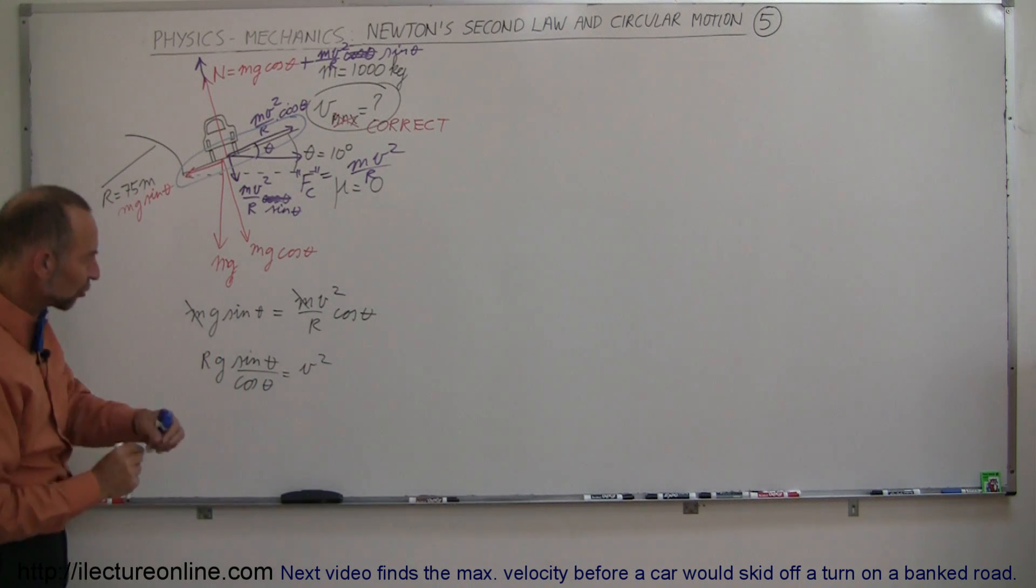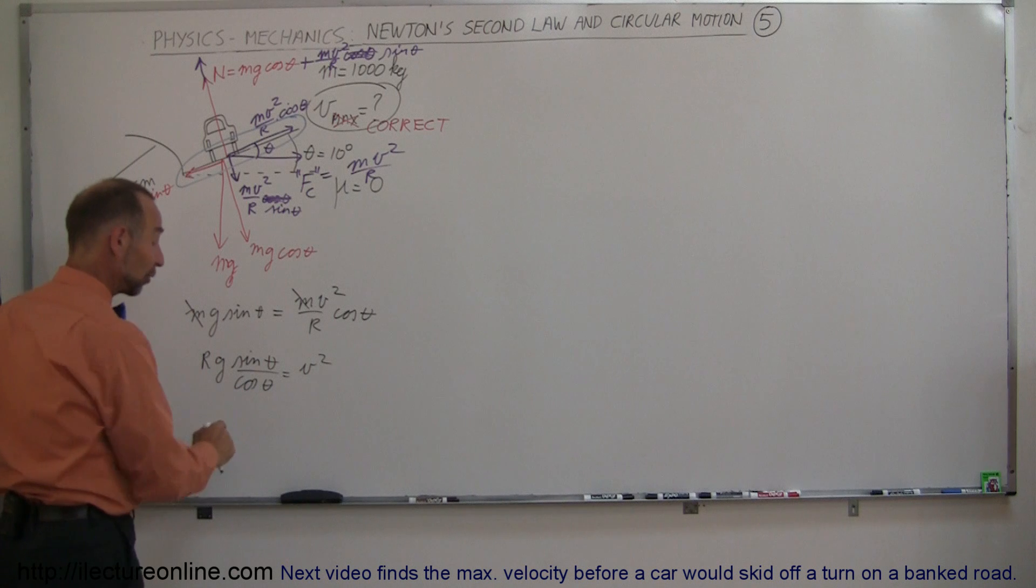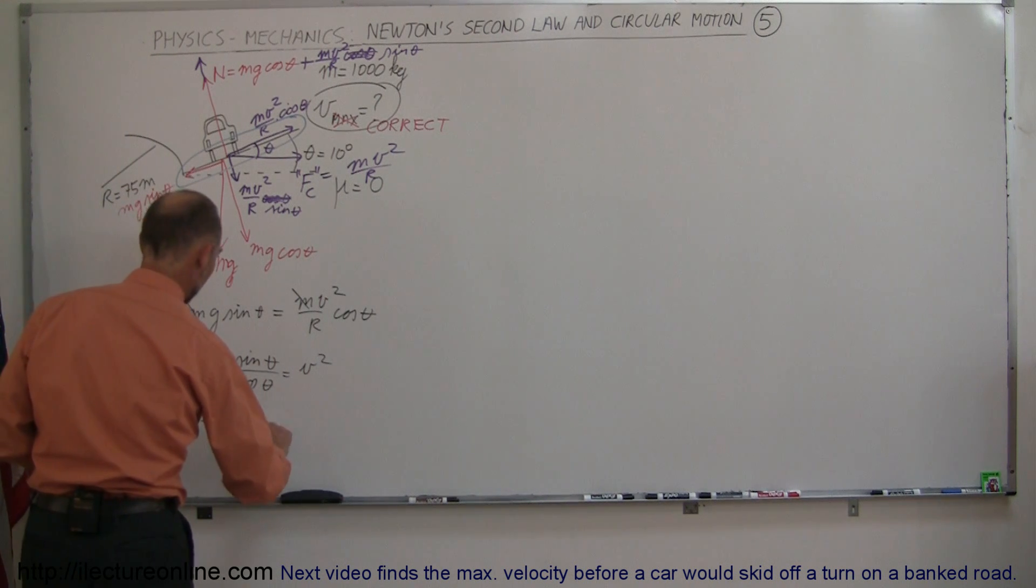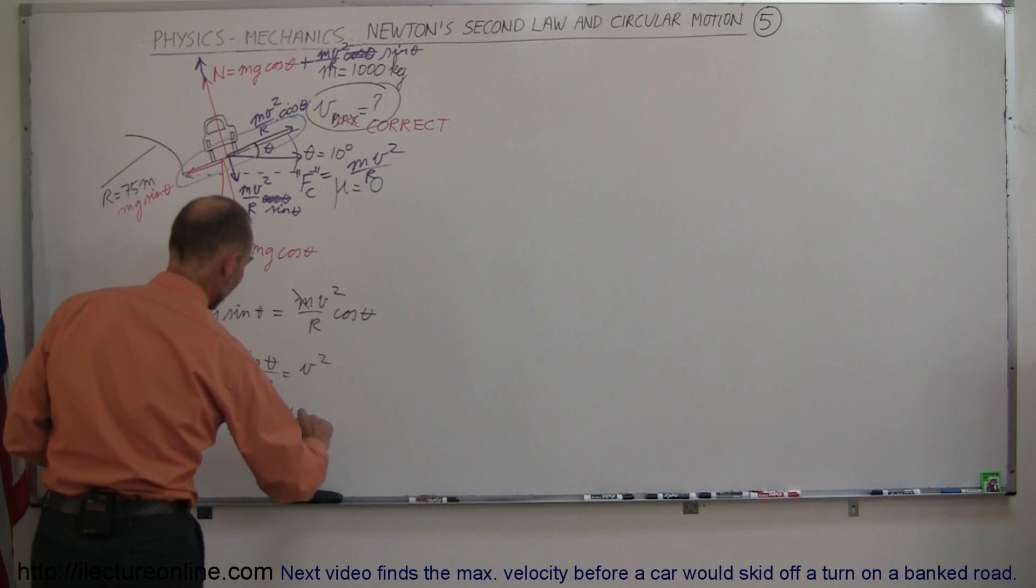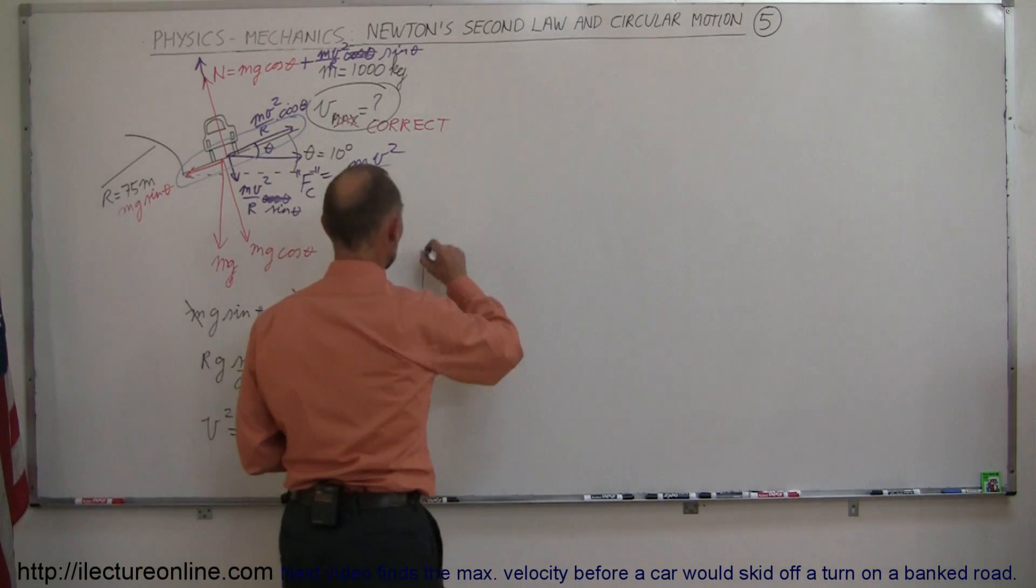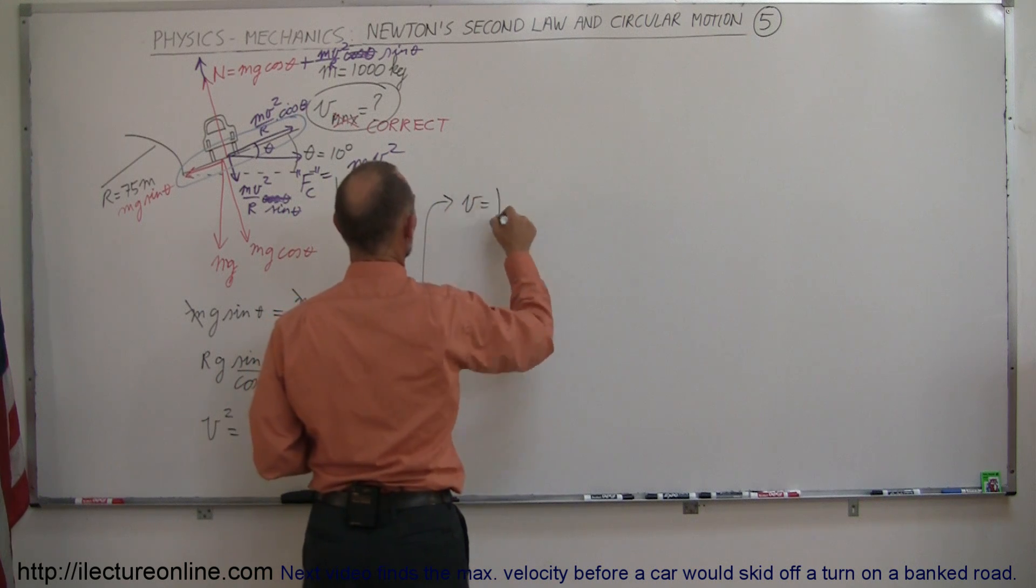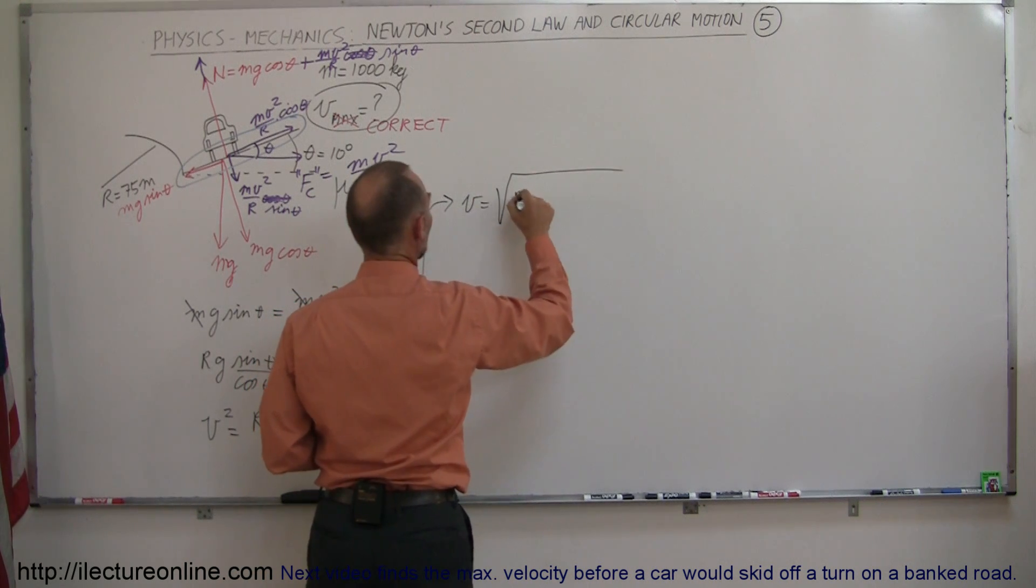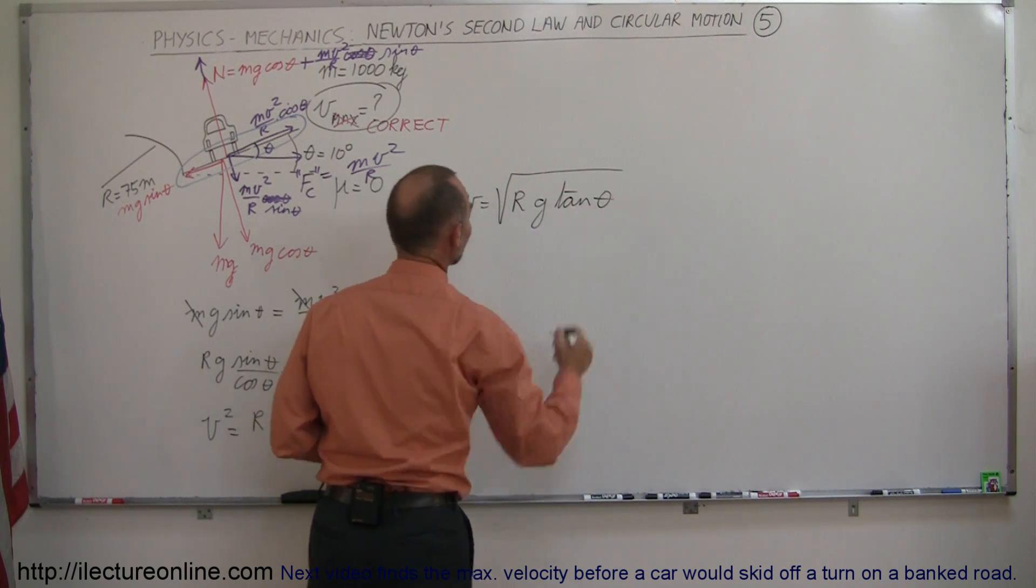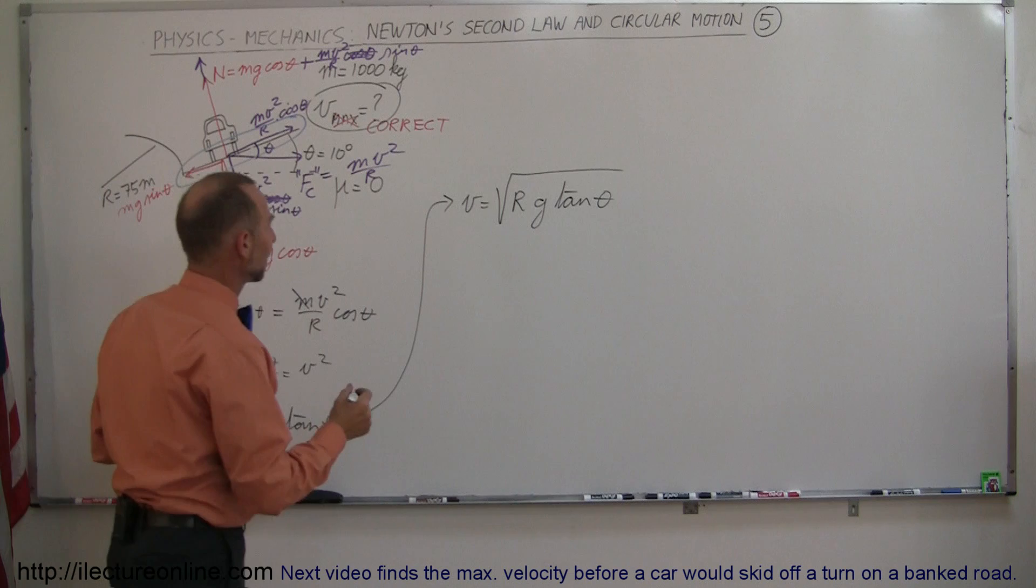I can now turn the equation around. And the sine divided by cosine is the tangent. So I can write that V squared is equal to RG times the tangent of theta. And finally, I can take the square root of both sides. So V is equal to the square root of RG times the tangent of theta. Now all we have to do is plug in numbers and see what we get.